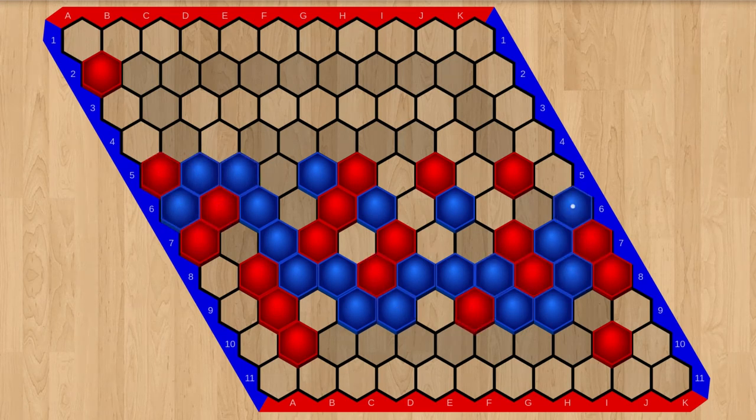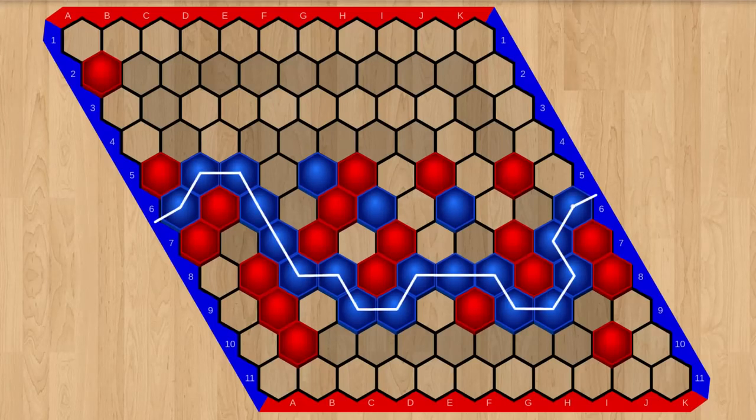The game ends when one player connects their two edges with an unbroken path of their stones. The path does not have to be straight.